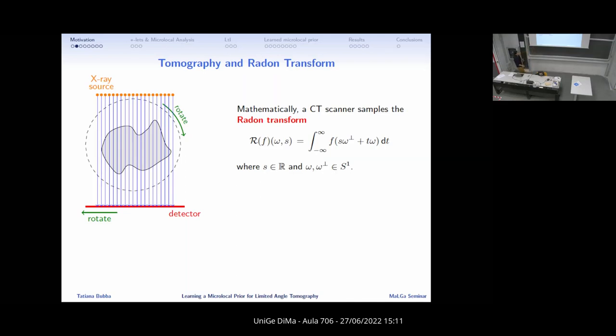The X-ray source shoots X-rays, which are attenuated in different ways depending on the composition of the matter inside, and then they record how many photons made it through the object. This, from a mathematical perspective, is modeled through the Radon transform, which depends on two parameters: omega, which is the angle, the position around the object, and s is the offset, the position on the detector.